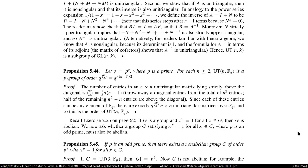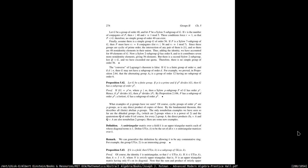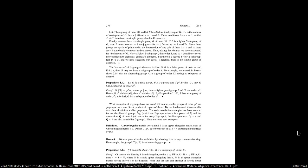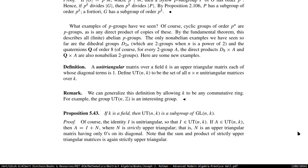We're left with the unitriangular matrices. I still don't get the big picture idea about why he's doing this. A unitriangular matrix over a field is an upper triangular matrix each of whose diagonal terms is one. So UT(n, k) is the set of n×n unitriangular matrices over the field k. If k is a field, then UT is going to be a subgroup of GL. The identity is unit triangular.